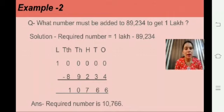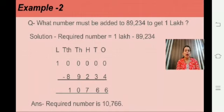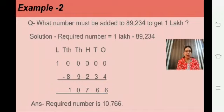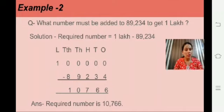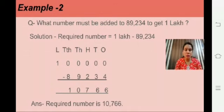So the solution is: required number = 1 lakh minus 89,234. Arrange these numbers in vertical form and write the place values. When you subtract, the answer will be 10,766. Therefore, the required number is 10,766.